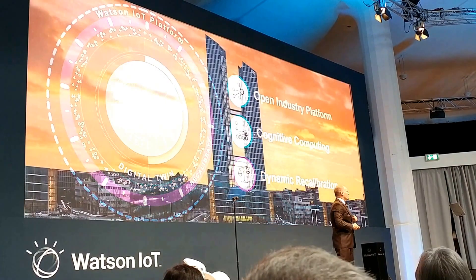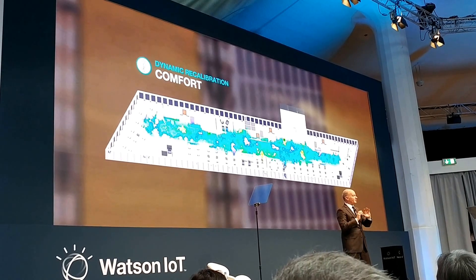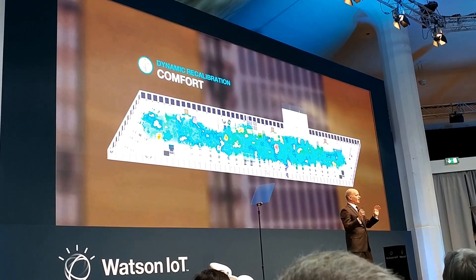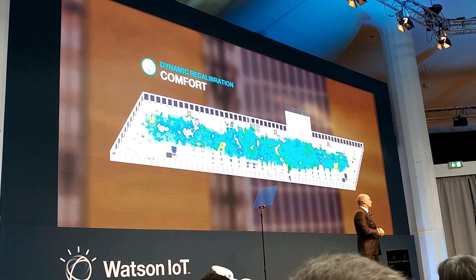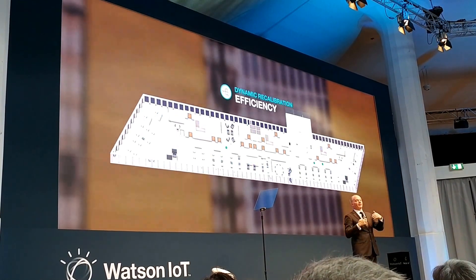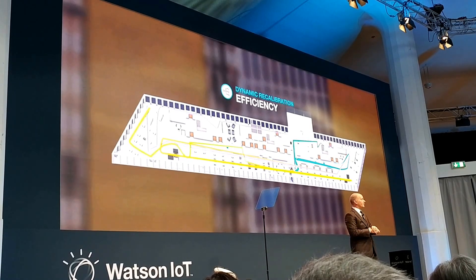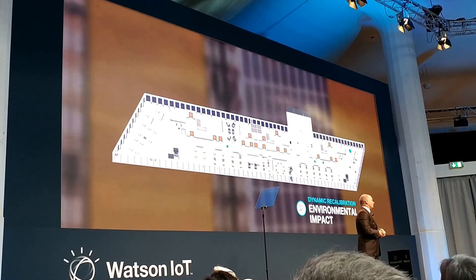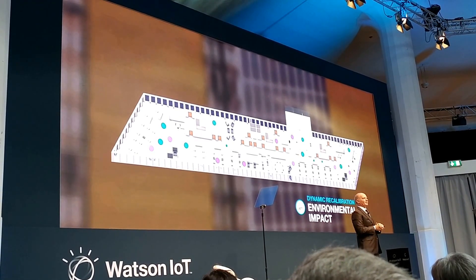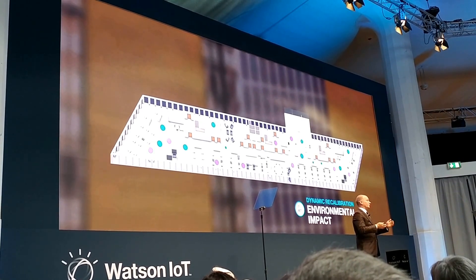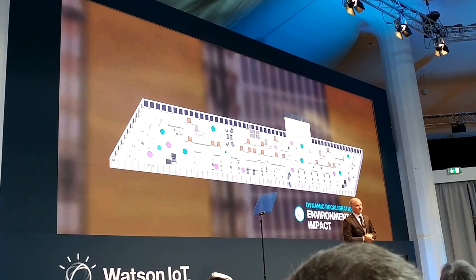You can see a digital twin in action at our Watson IoC Center. We've instrumented several of the floors, collect information, and apply our digital twin models to show dynamic calibration around comfort, efficiency of workspace layout and office capabilities, and the economic or environmental impact of the representation. Come visit our IoC Center, see the digital twin model in action, and we can talk about how you can apply it to your own business.